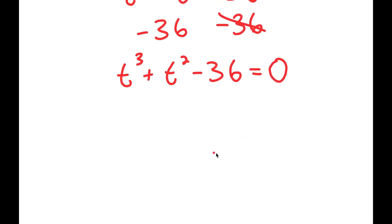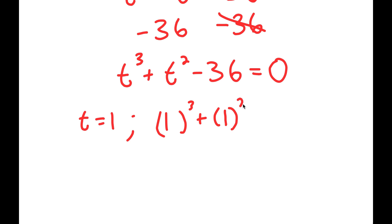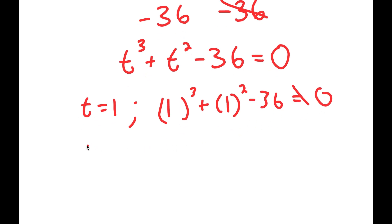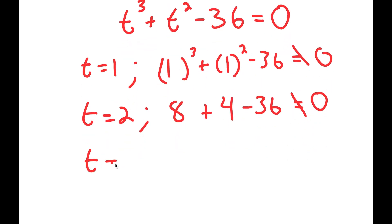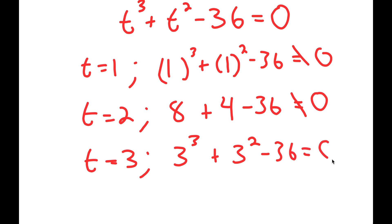To solve this cubic equation, I need to first find one solution by plugging in numbers. If t equals 1, I get 1 plus 1 minus 36, which does not equal 0. If t equals 2, I get 8 plus 4 minus 36, which also does not equal 0. If t equals 3, I get 27 plus 9 minus 36, which does equal 0. So t equals 3 is a solution.